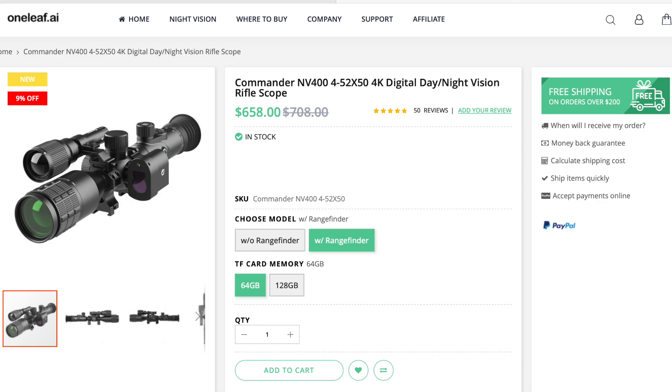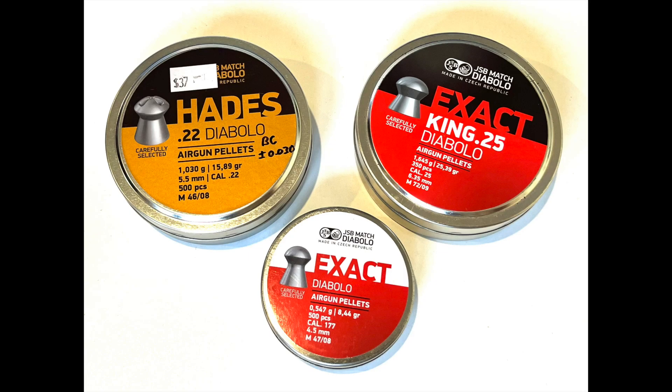And of course, the biggest pro is the one thing we haven't spoken about yet, the price. As of the beginning of May 2024, the Commander NV400, the exact model that I'm reviewing, is for sale on the oneleaf.ar website for 658 US dollars. And if you use the discount code in the description below, you'll get 10% off that price. That's a lot of scope for 592 dollars. And if you do decide to buy one and use the discount code below, I might get a few bucks to put towards my next tin of pellets.